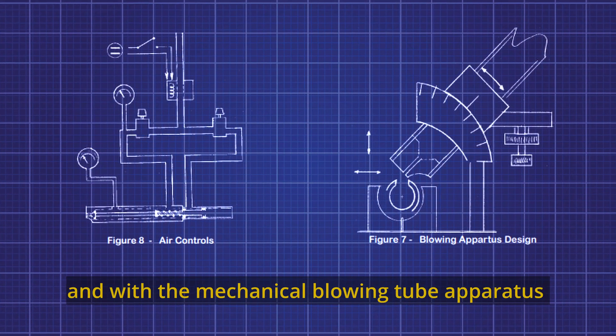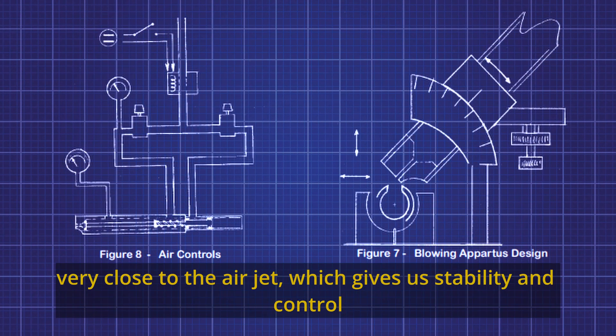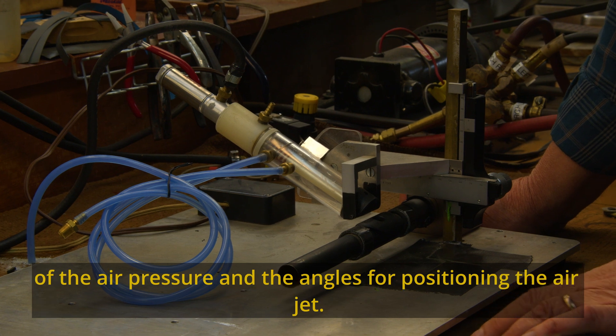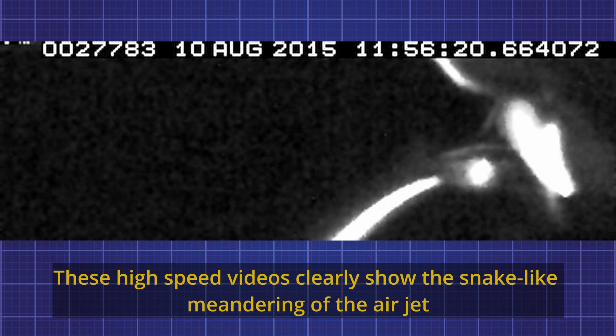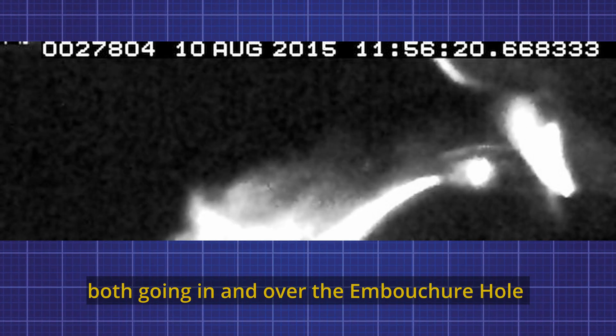and with the mechanical blowing tube apparatus that I made to open and close the airstream very close to the air jet, which gives us stability and control of the air pressure and angles for positioning. These high-speed videos clearly show the snake-like meandering of the air jet going in and over the embouchure hole.